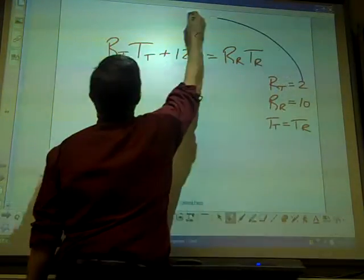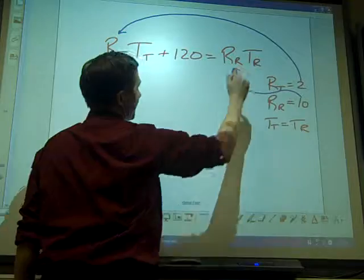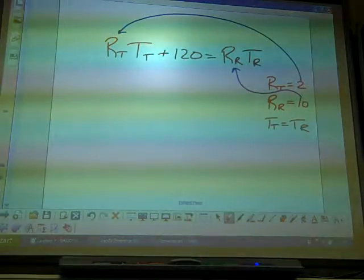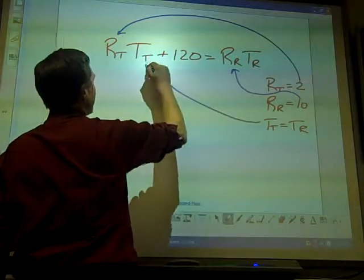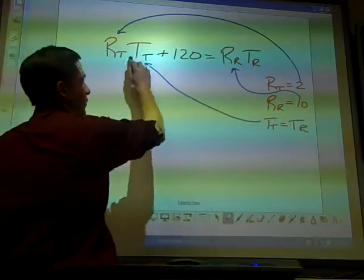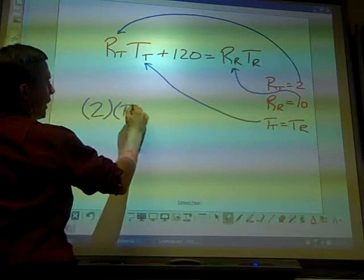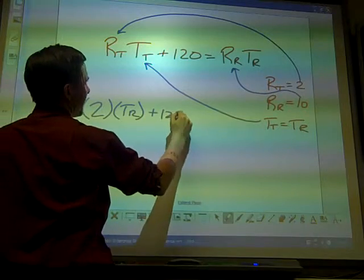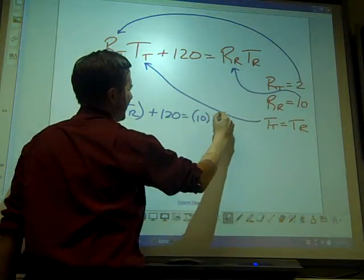Again, R_T is 2, R_R is 10. It says T_T is T_R. I'm going to replace T_T with T_R, and I'm only going to do one of the two. If I do this, I get 2T_R plus 120 equals 10T_R.